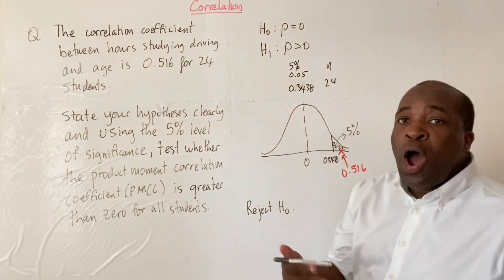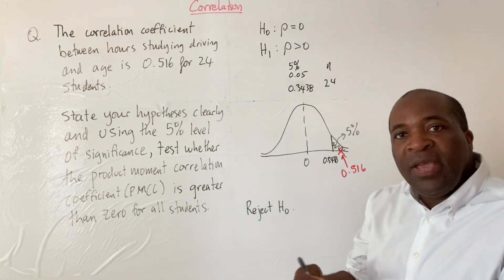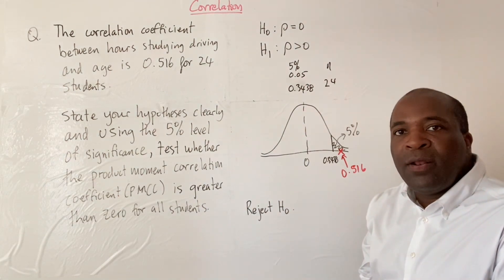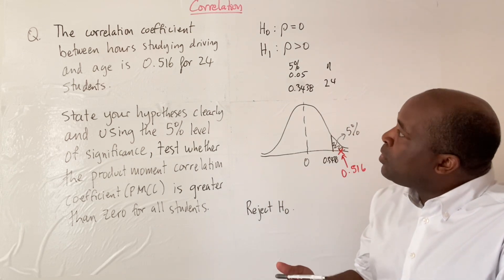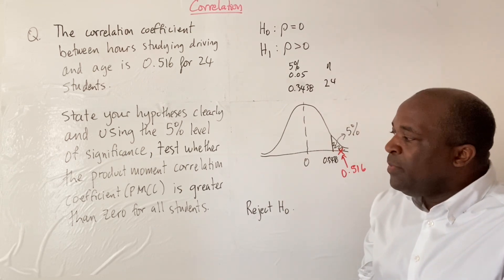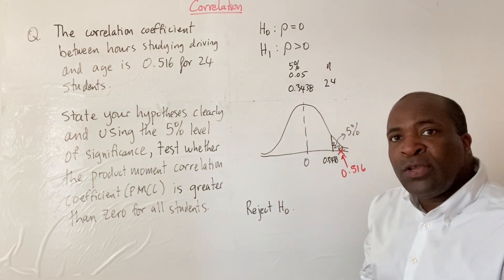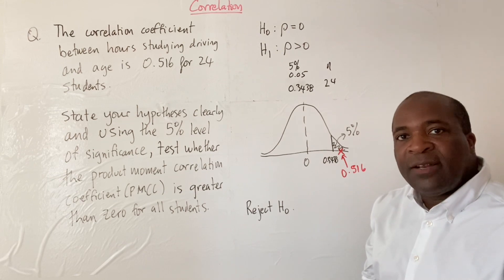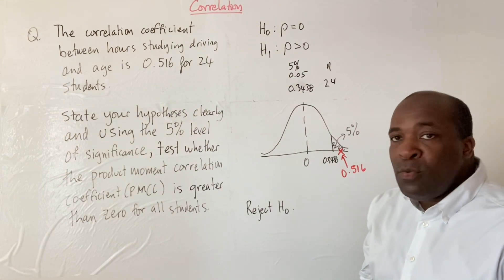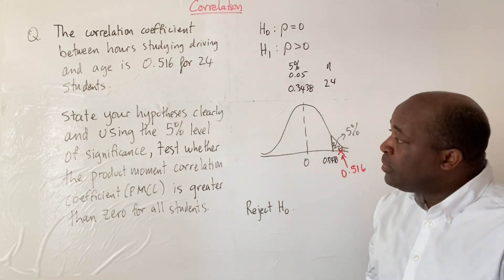How would we conclude this? We would say there is insufficient evidence at the 5% level to support the claim that the correlation coefficient equals 0, or equivalently, there is sufficient evidence at the 5% level to support the claim that the product moment correlation coefficient is greater than 0. And that concludes this presentation.